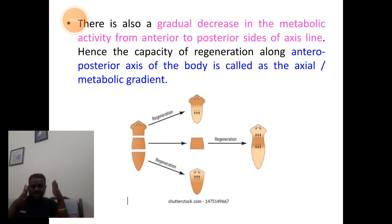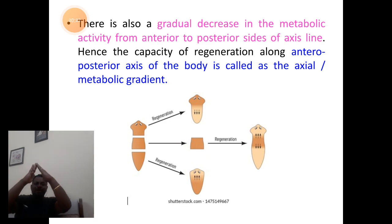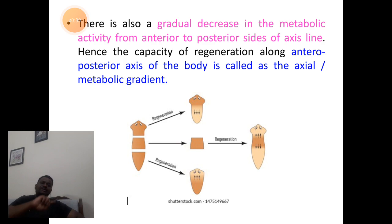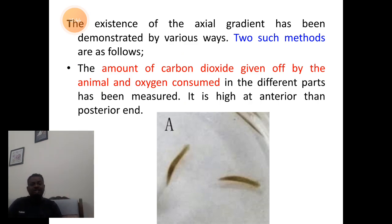There is a gradual decrease in the metabolic activity from anterior to the posterior end, all along the anteroposterior axis, and the power of regeneration will decrease along this axis. This is why it is called the axial or metabolic gradient — gradient meaning sloping downward from peak to base. Axial gradient is the gradient related to the axis of anterior-posterior polarity.